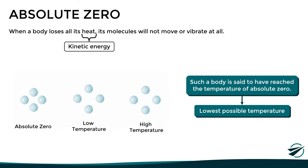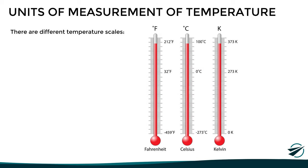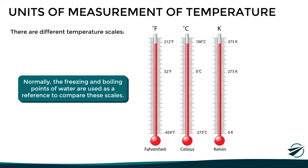Let's move on to the units of measurement of temperature. Although there are different scales, the most commonly used are Fahrenheit, Celsius, and Kelvin. The freezing and boiling points of water, as well as absolute zero, are used as reference points to compare these scales. Absolute zero is represented by 0 Kelvin, minus 273 degrees Celsius, and minus 459 degrees Fahrenheit. The freezing point of water is 273 Kelvin, 0 degrees Celsius, and 32 degrees Fahrenheit. The boiling point of water is 373 Kelvin, 100 degrees Celsius, and 212 degrees Fahrenheit.